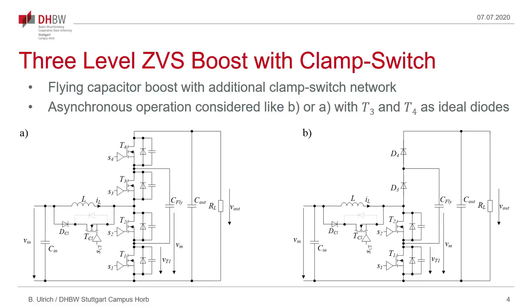To these converters an additional clamp switch network is added shown here on the left and on the right which is in parallel to the inductor and allows to trap the energy which would otherwise resonate in discontinuous conduction modes with the capacitances connected to the switch node. This lets the current freewheel to initiate a zero-voltage switching turn on of the two lower switches.